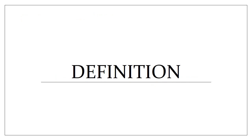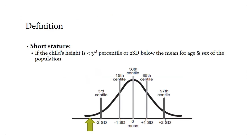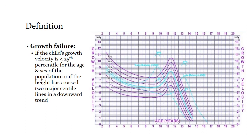But how do you define short stature? The statistical definition is if the child's height is less than third percentile or two standard deviations below the mean for age and sex of the child. There's another definition of growth failure which basically means that the growth velocity is below 25th percentile for the given age and sex.